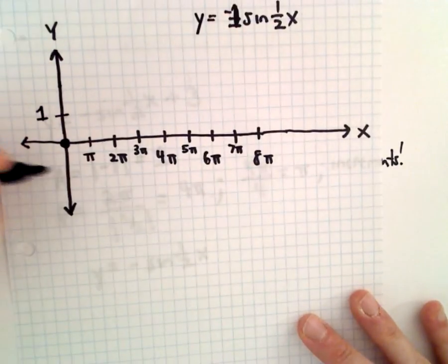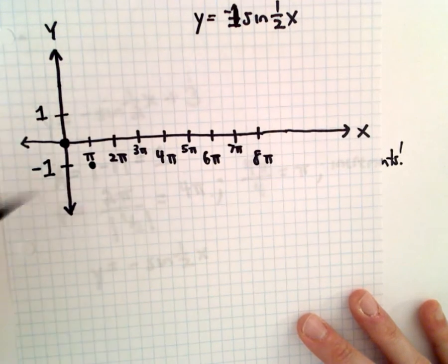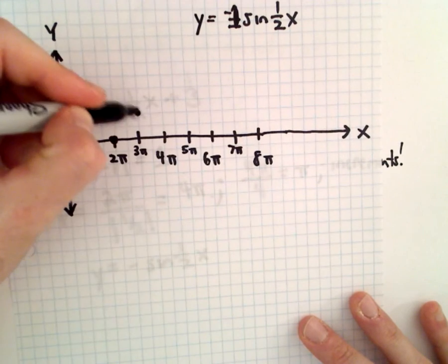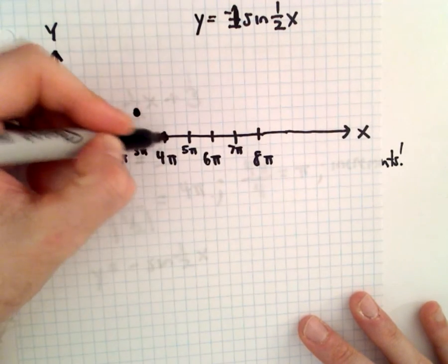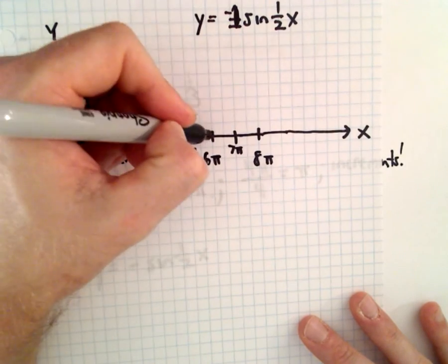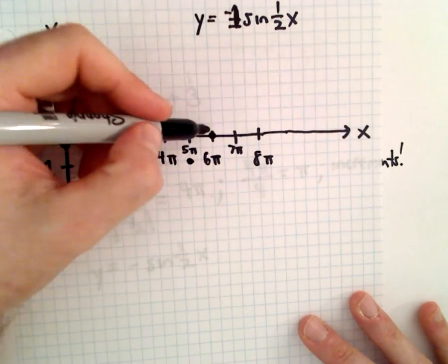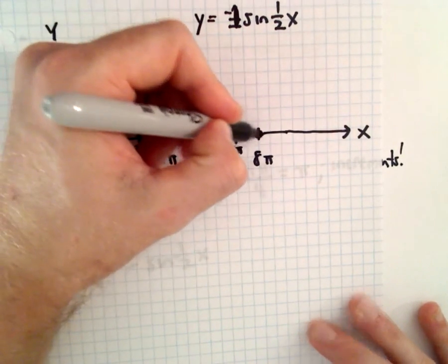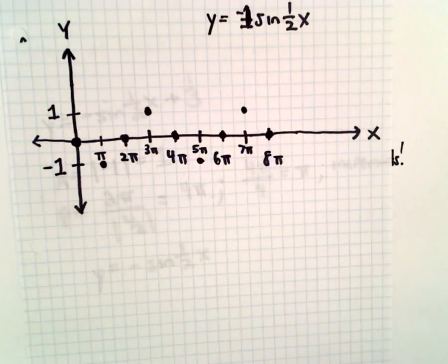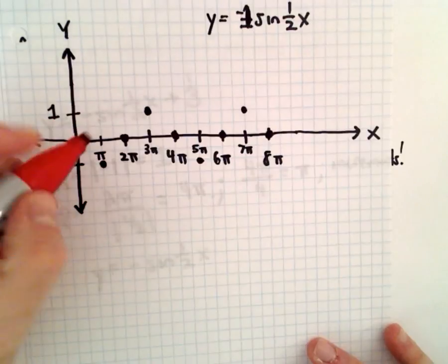So we can put positive 1 there, negative 1 there. So at π, it'll be at negative 1. At 2π, it will be back at zero. At 3π, it'll be at positive 1. At 4π, it'll be back at zero. At 5π, it'll be at negative 1, and then it'll be at zero, and then at positive 1, and then back at zero. So that's going to be the graph of negative sine of one-half x.